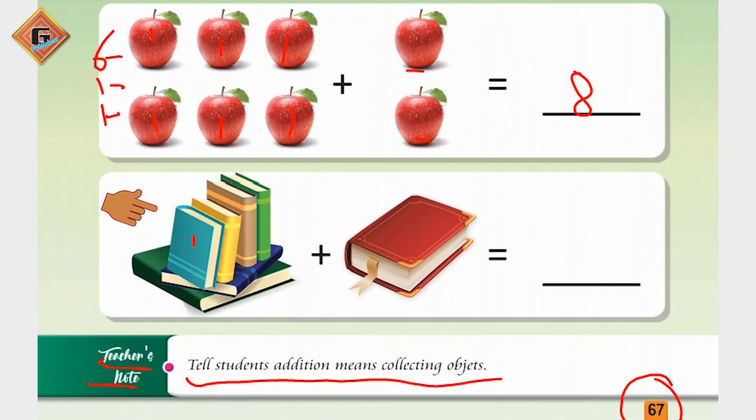After that, we are having one, two, three, four, five, six - hamare paas six books hain. When we add one more book, toh vo kitni ho jayengi? It will be seven books.